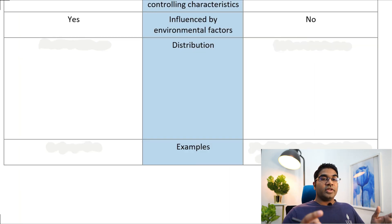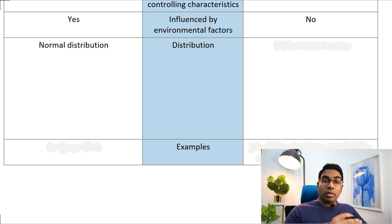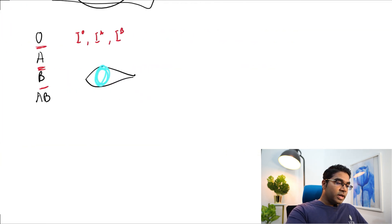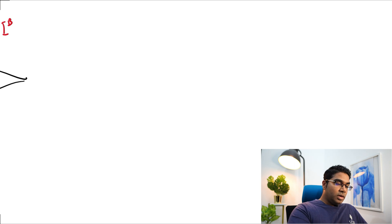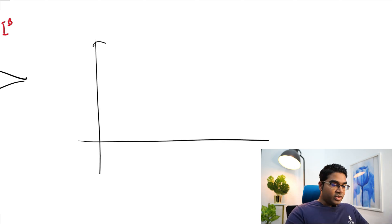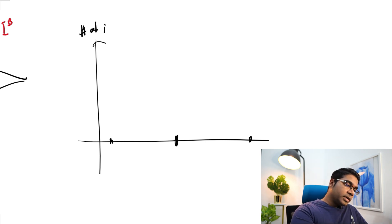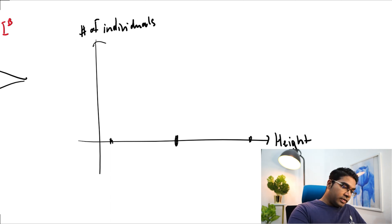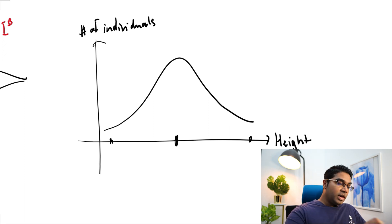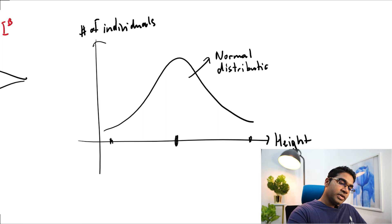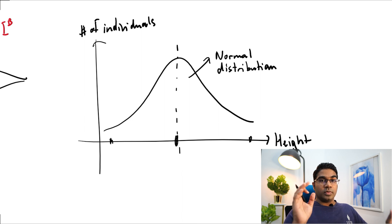When it comes to distribution, characteristics that show continuous variation usually have a normal distribution. Take height for example. If you compare yourself with a large group of people, normally most people will sit within an average height — somewhere in the middle. You will have some people who are very tall and very few people who are very short. When we draw the number of individuals against the characteristic, the graph formed has a bell shape — this is known as the normal distribution. Most of the population have the characteristic at about the mean value, and a very small portion of the population will occupy the extreme values.